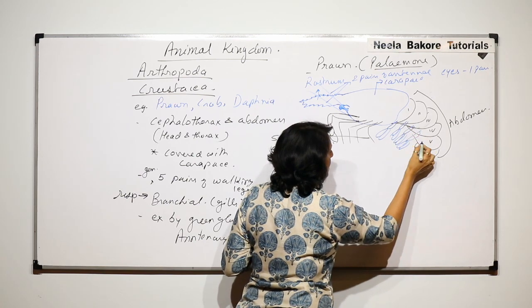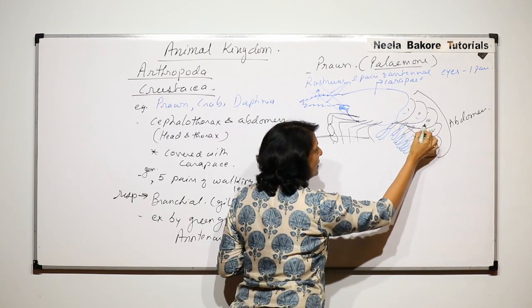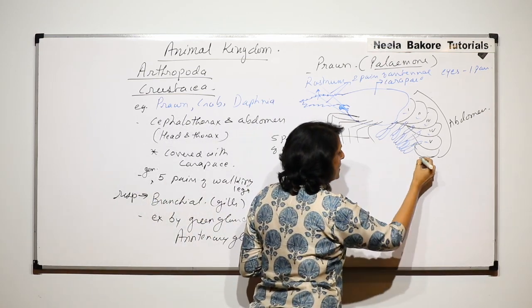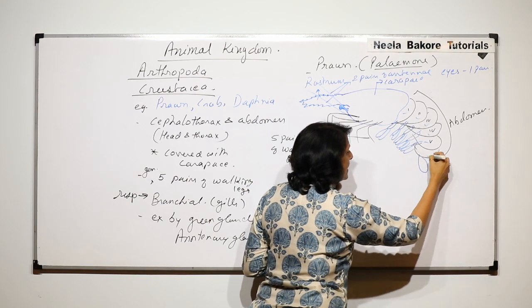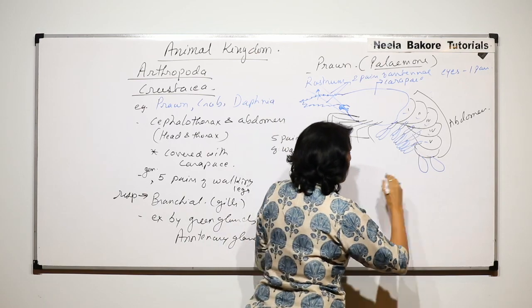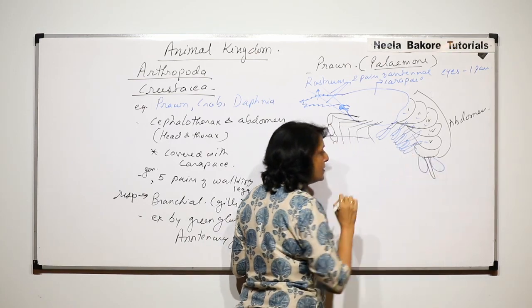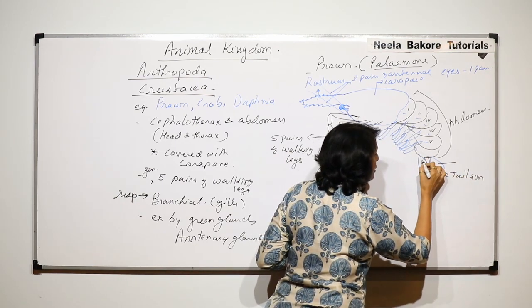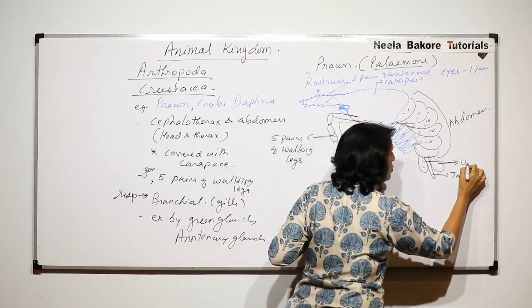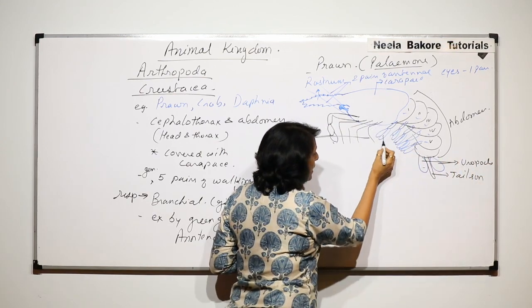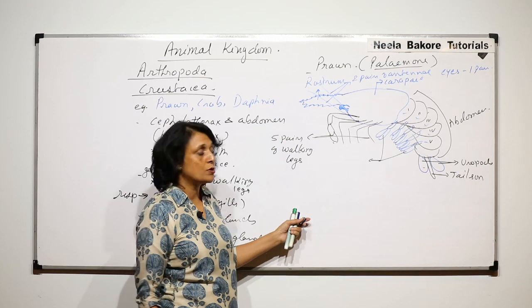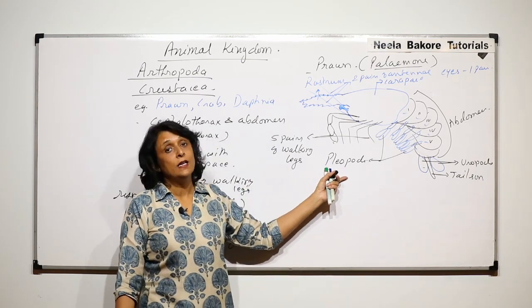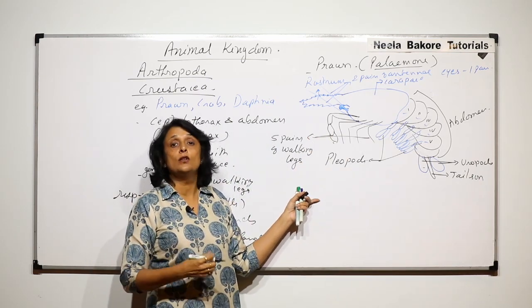The last abdominal segment also has paired structures, but these are extended backwards. Between them is a pointed tail-like structure called the telson. The paired structures from the last abdominal segment are called uropods, while those from the first five abdominal segments that help in swimming are called pleopods.